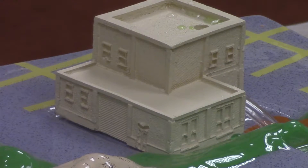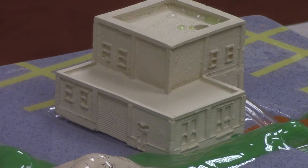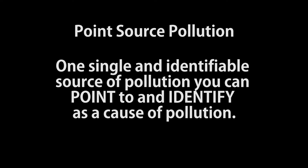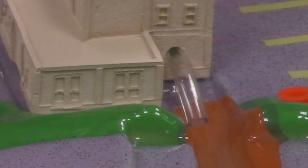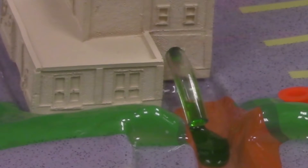This identifiable source of pollution is called point source pollution. Point source pollution can be remembered as something you can point to and identify as a cause of pollution. We can point to this pipe, so it's point source pollution.